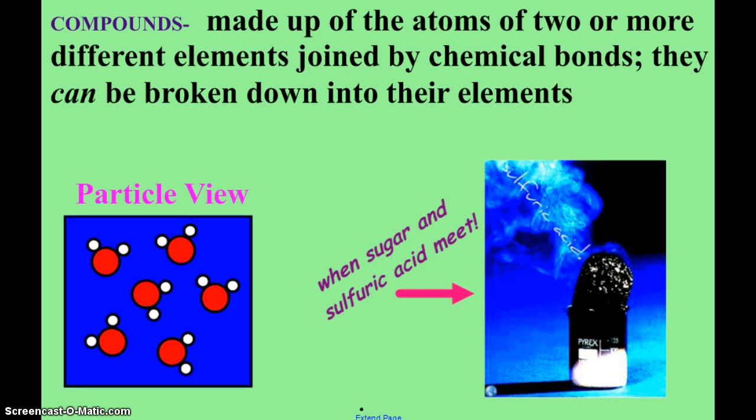And so, yes, when we put our elements together, we get these compounds. Those atoms of the different elements are joined by chemical bonds, ionic and covalent, you might remember. And a compound can be broken down back into the elements. So, here you see a picture, sugar, carbon, hydrogen, and oxygen.